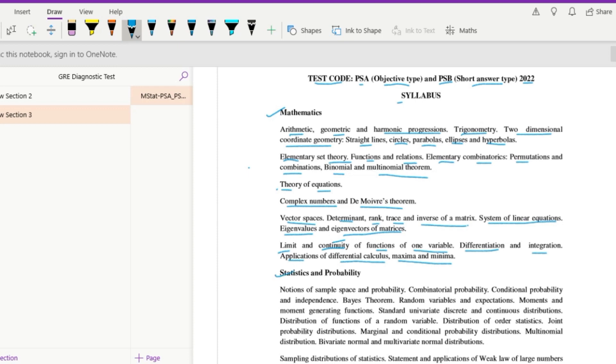Moving over to the section of statistics and probability we have notions of sample space and probability, then combinatorial probability, then conditional probability and independence, then Bayes theorem, random variables and expectations, then moments and moment generating functions.